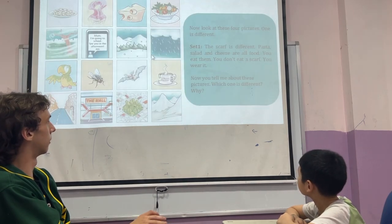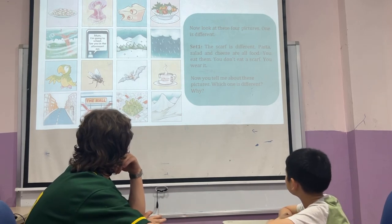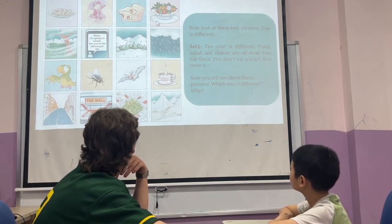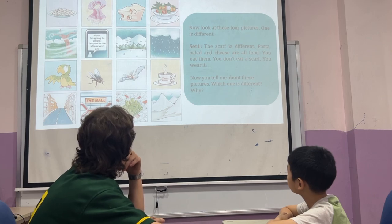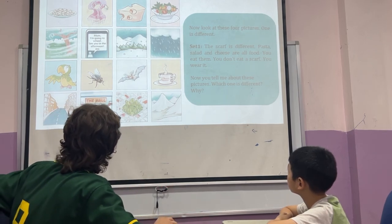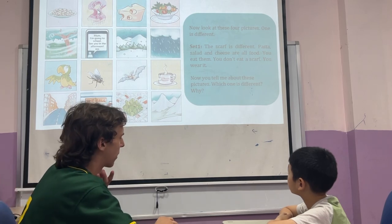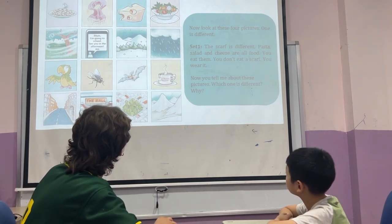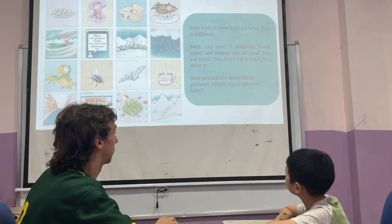Nice. Okay, now let's spot the difference. So in the first line, we have four pictures. We're going to find the odd one out. I say picture number two is the odd one out because you cannot eat a scarf, but you can eat pasta and cheese and salmon.